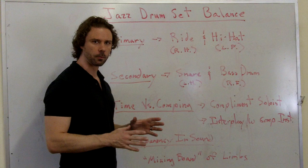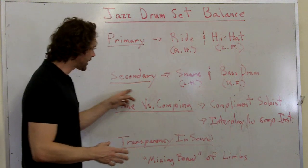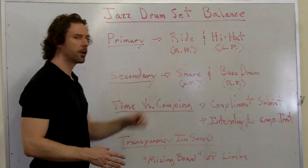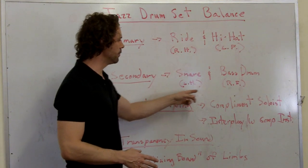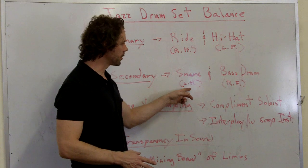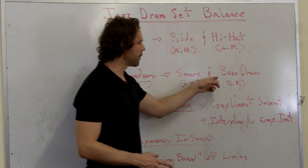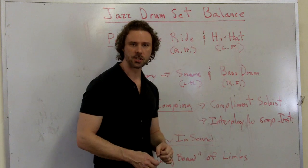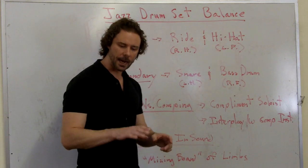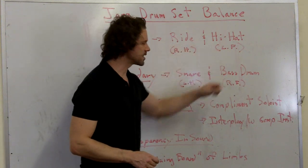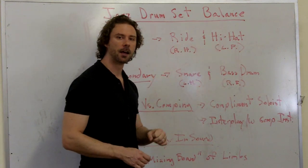Now the secondary, and not to say that these aren't important, but these are the primary timekeepers, and the secondary are our snare drum and bass drum. Snare drum with the left hand, bass drum with the right foot. Now your bass drum may be feathery, which is a concept we'll talk about later, and keeping soft quarter notes underneath the ride cymbal pattern and hi-hat left foot pattern.